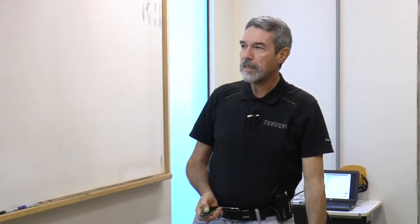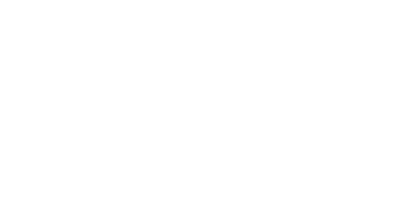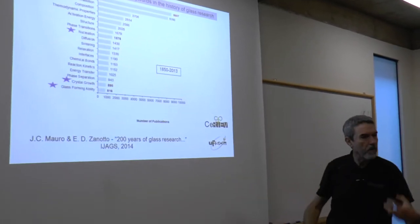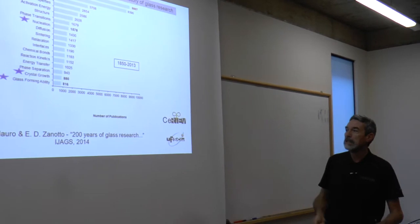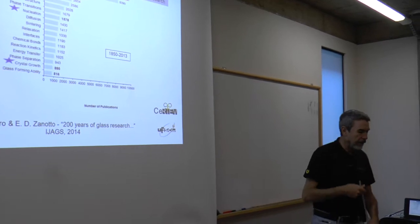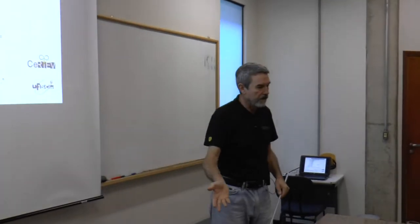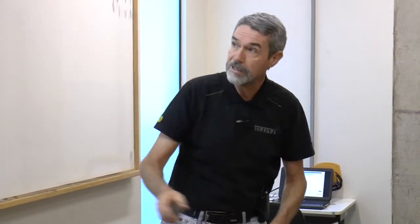Crystallization, nucleation, crystal growth, and glass forming ability are the most frequent keywords used in the glass science and technology field. This is because you either want to avoid crystallization or induce crystallization to produce a glass ceramic — avoid crystallization to produce a glass. That's the reason why these keywords are so important in glass science and glass technology.